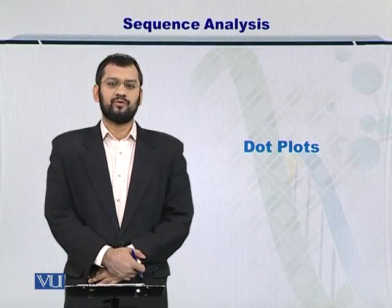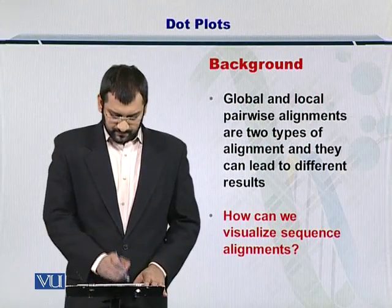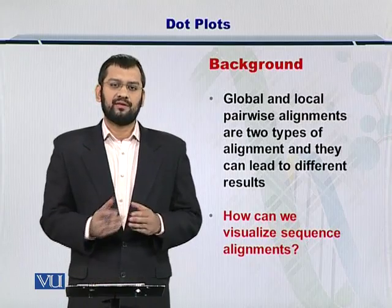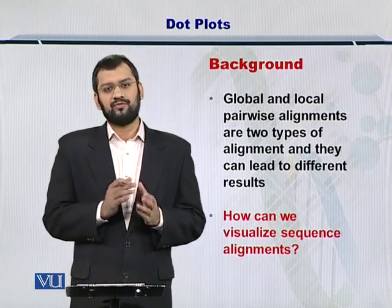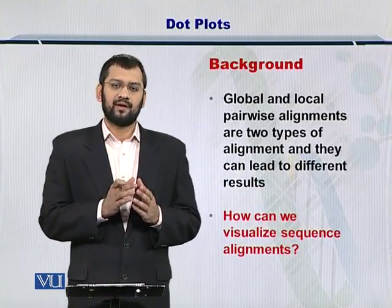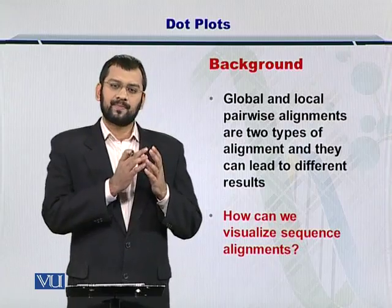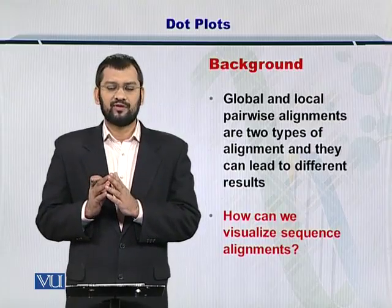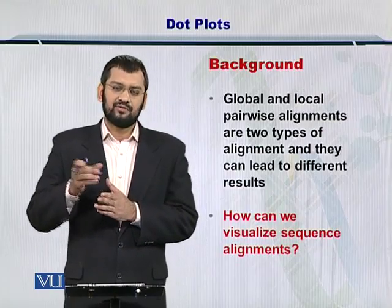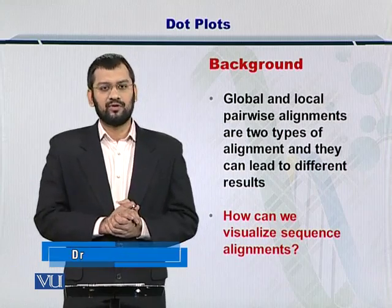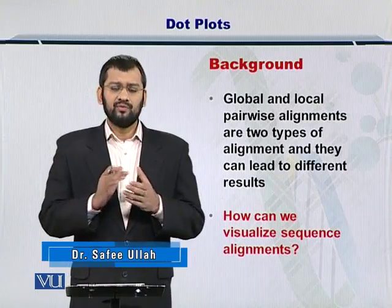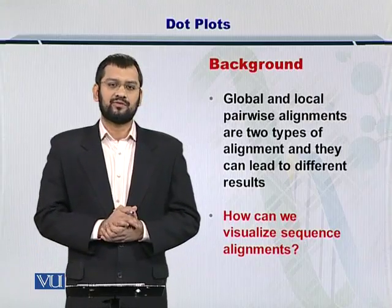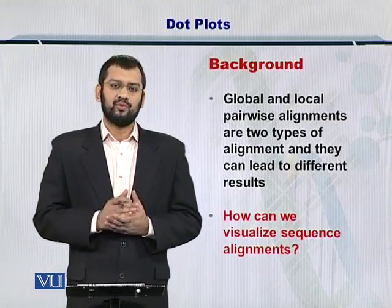Dear students, I am going to introduce you to dot plots. You already know that global and local alignments help you to compare two biological sequences in two different ways. Global alignments allow you to compare sequences such that the entire sequences are compared, while local alignments allow you to compare sequences in such a way that local matches are more importantly scored. How do we start this process, and how can we visualize it? Dot plots are one tool to do that.